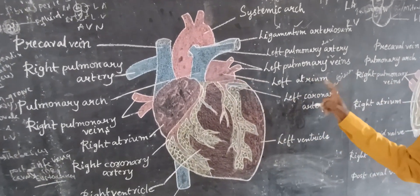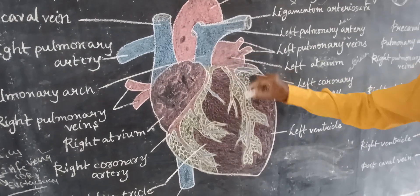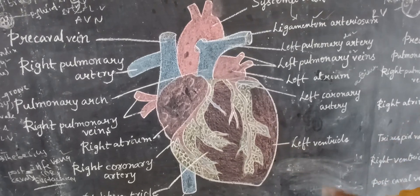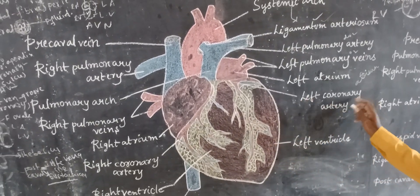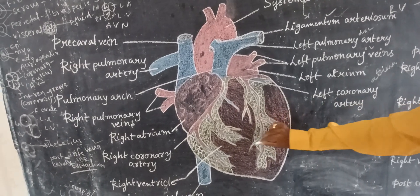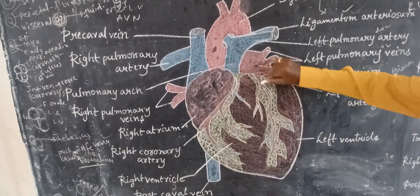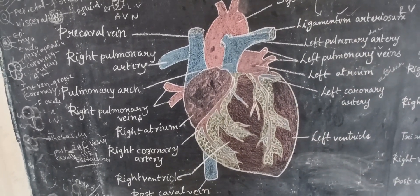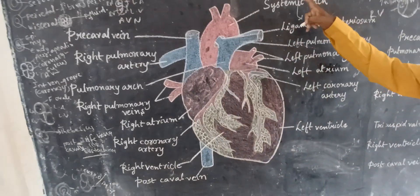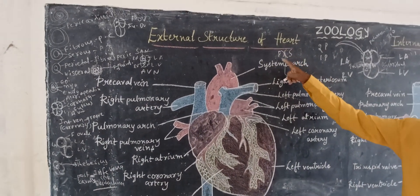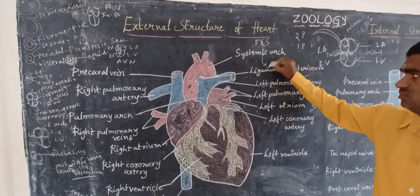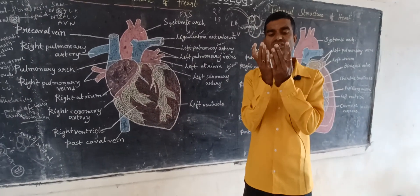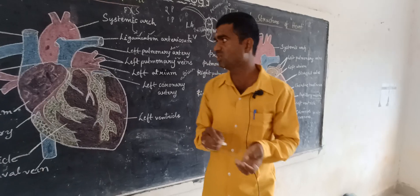The left atrium is present. It contains bicuspid or mitral valves, through which blood reaches the left ventricle. The left coronary arteries are forming on the left side. Where the pulmonary arch and systemic arch divide, that part is the ligamentum arteriosum — a narrow-like structure.